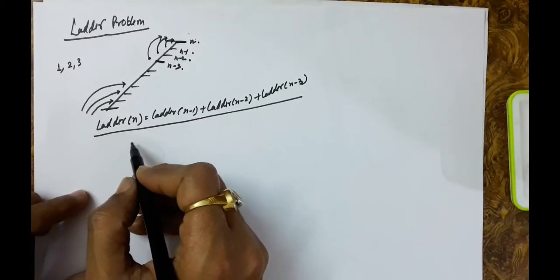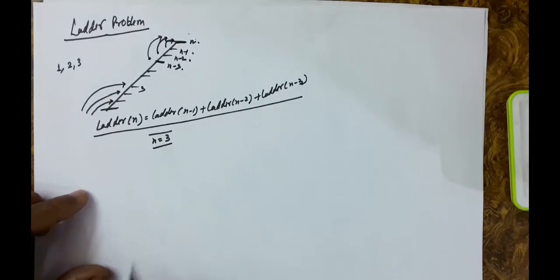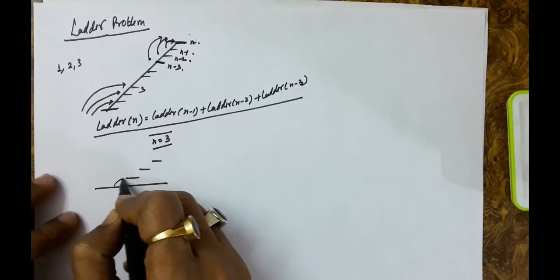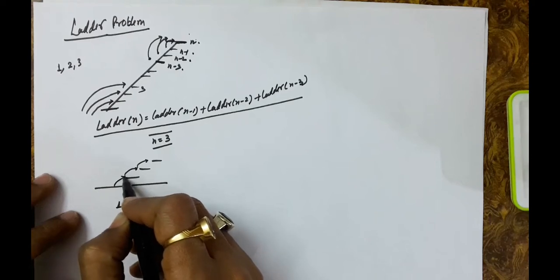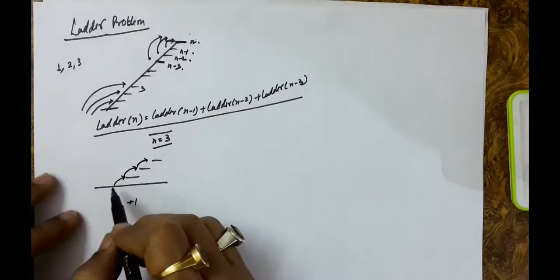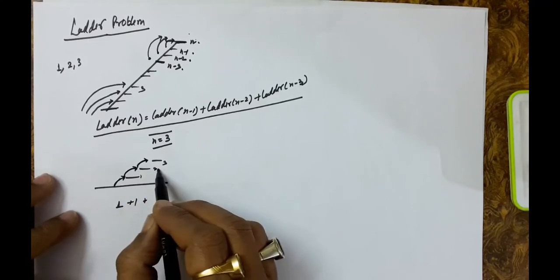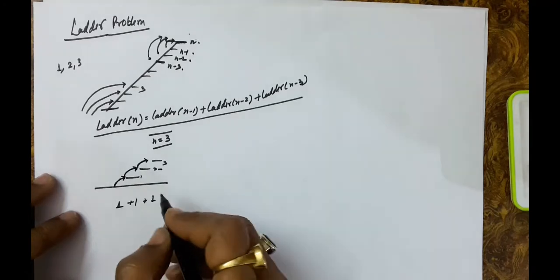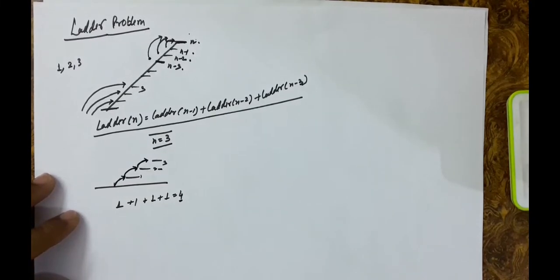Let us take an example. Let us say n equals 3, so there are three steps only and you are at the ground. One way is to take three single steps one at a time. Another way is to take one step to reach the first, then take two steps simultaneously to reach the top. Another way is to take two steps to reach the second step, then take one step to reach the third. And the last way is to take three steps simultaneously to reach the top. So the total number of ways here are four.